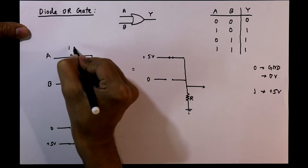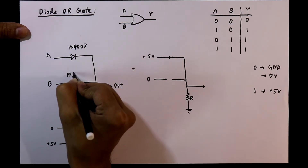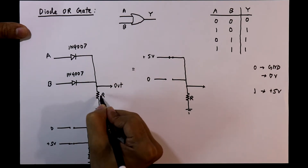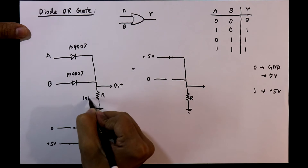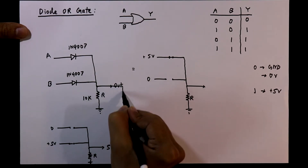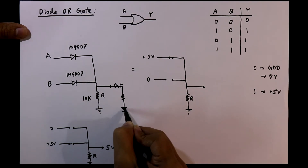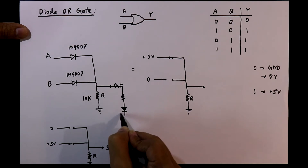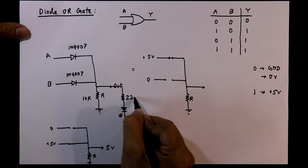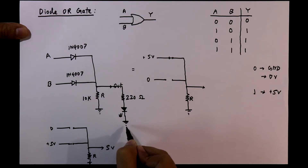In the practical circuit, the diodes will be normal silicon diodes 1N4007. Both diodes and the pull-down resistor have a value of 10 kilo-ohms. With the output we will connect another resistor and an LED to see the output. The resistor value is 220 ohms and the cathode side of the LED is connected to ground.